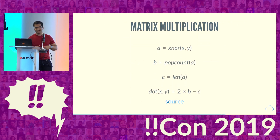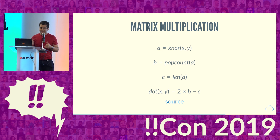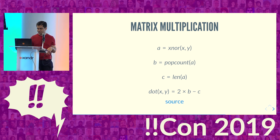How do you do matrix multiplication with binary convolutional neural networks using pop count? It turns out you can use two instructions: XNOR and pop count. You take two matrices, XNOR them, do the pop count, then take the length of one matrix and subtract it from two times the pop count. There's a source referencing some Apple documentation if you're interested.